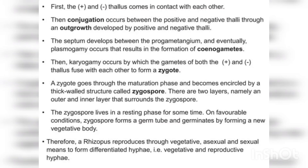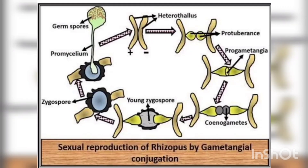Sexual reproduction is by conjugation between positive and negative hyphae. The positive and negative hyphae come close to each other, the septum between them disappears, and eventually a gametangium is formed. Karyogamy occurs between the positive and negative nuclei; they fuse to form the zygote. The zygote then becomes the zygospore. The zygospore undergoes a period of rest, and on favorable conditions it produces a germ tube and germinates. Thus Rhizopus reproduces through vegetative, asexual, and sexual means.